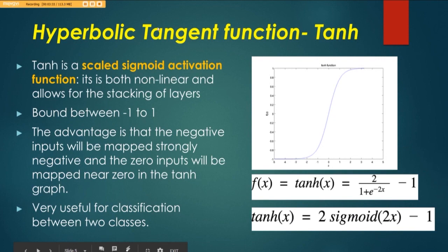A very commonly used activation function is the tan hyperbolic activation function, and as you can see from the formula, it is a scaled sigmoid activation function and it is non-linear. Its values can range from minus 1 to 1, and the advantage is that the negative inputs will be mapped strongly negative, and 0 inputs will be mapped near 0. The upshot is that this kind of activation function is useful when we want to carry out classification between two classes. So if we want to work with binary classification problems, then we can consider tan hyperbolic.